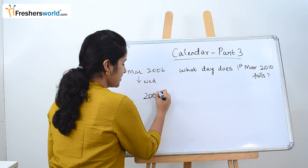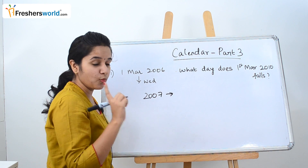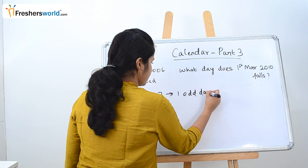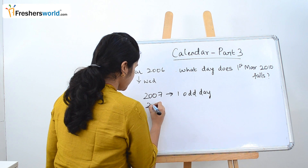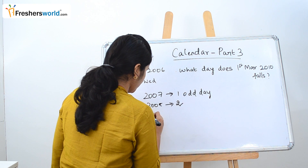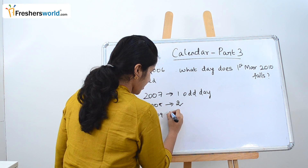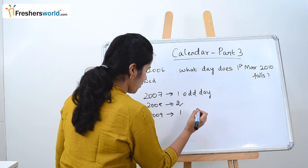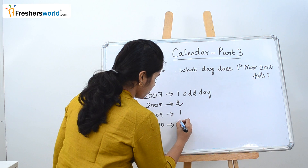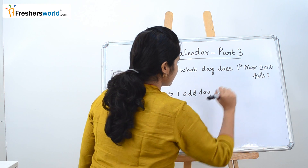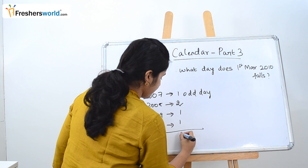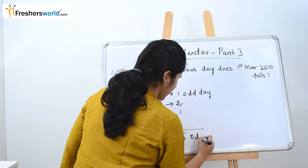2007 is not a leap year, so it has 1 odd day. 2008 is a leap year, so it has 2 odd days. 2009 is not a leap year, so it has 1 odd day. 2010 has 1 odd day. They have asked till 2010, so in total there are 5 odd days.